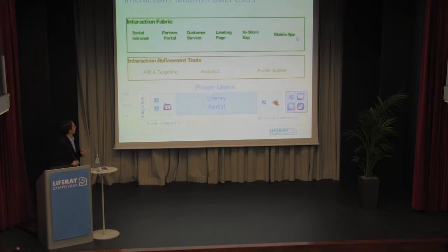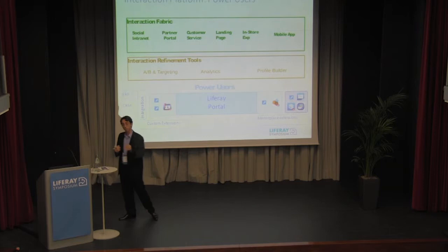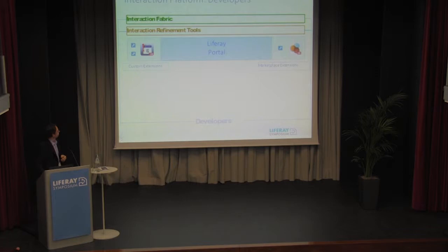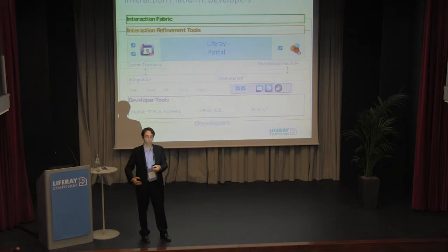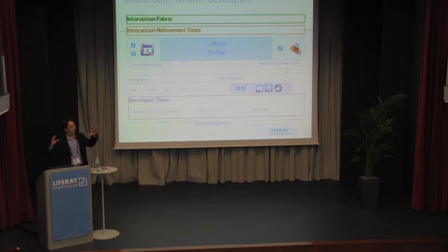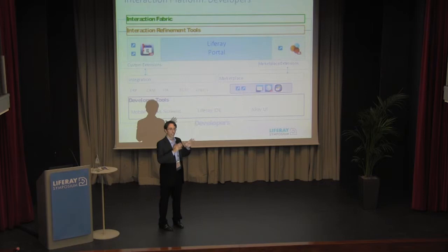Power users use integrations with backend systems and custom extensions that developers build for them, plus marketplace extensions and all the library features to build stories for the end user. On top of that, they use testing, targeting, and analytics to measure the message they are delivering. And finally, we have the developers, who are basically in charge of making all the information available for the power users — creating the tools that allow power users to build stories for the end user.